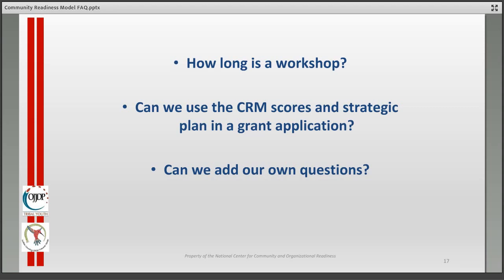Can we use the scores and strategic plan in a grant application? Most definitely. Many grant funders now require the community readiness model assessment and application phase as part of the application. Even when it's not required, communities have used their scores and strategic action plan in grant applications and been funded. It tells the funder exactly where the community stands and justifies why specific strategies were selected — because they fit the community's stage of readiness.